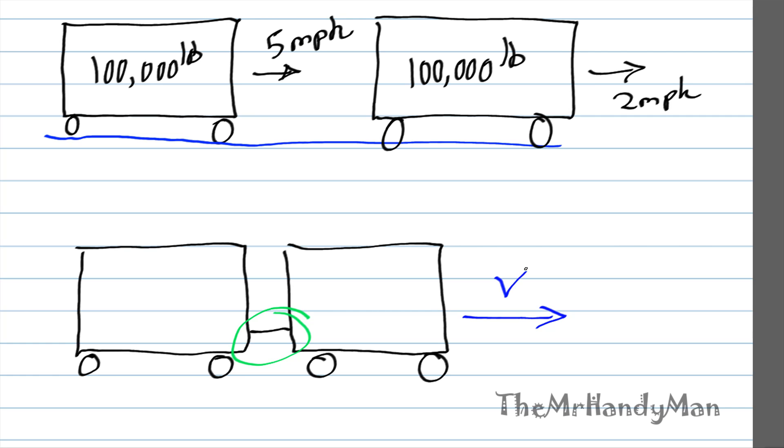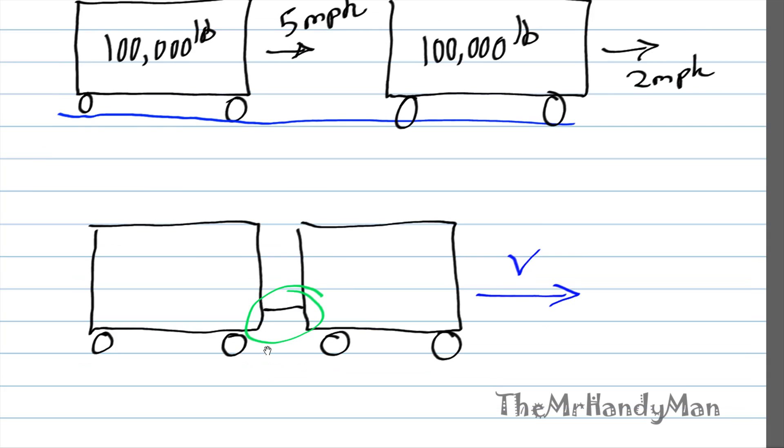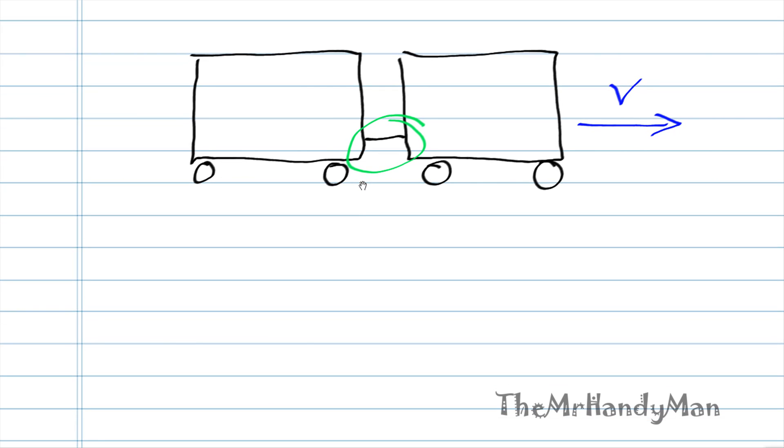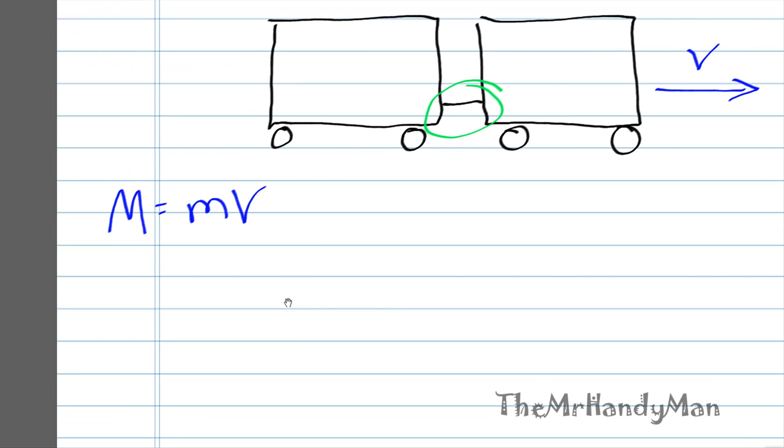So what we're going to do is use conservation of momentum to figure out what the speed is. The equations are relatively simple. Momentum being the mass times velocity, we could use a big M or some use different nomenclature for it, but I think we'll just stick with MV as known as momentum.